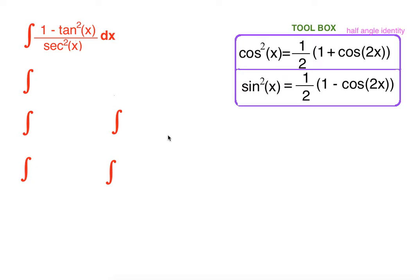Hi everyone. In this video we are going to integrate 1 minus tangent squared of x over secant squared of x. Our plan is to rewrite tangent and secant in terms of sine and cosine, but before that we are going to separate this fraction.